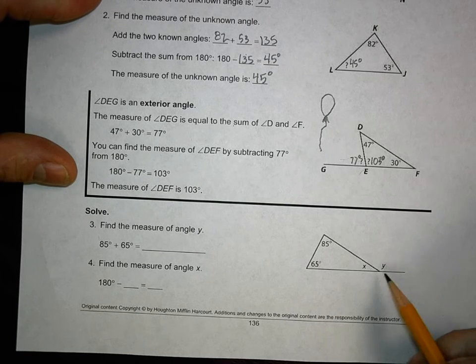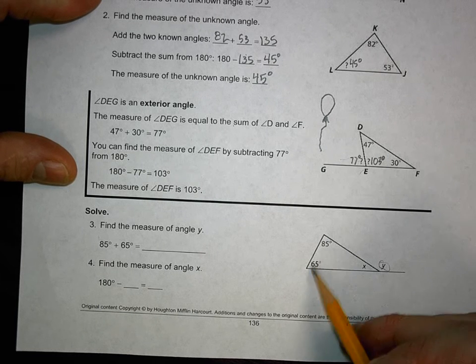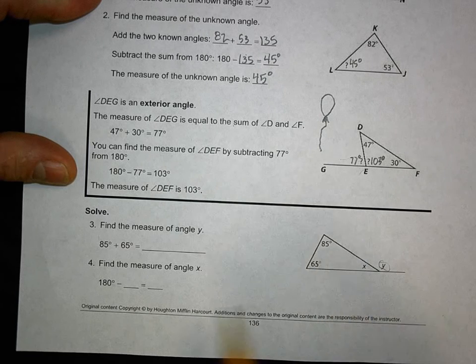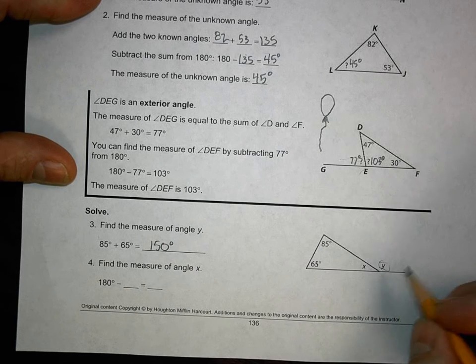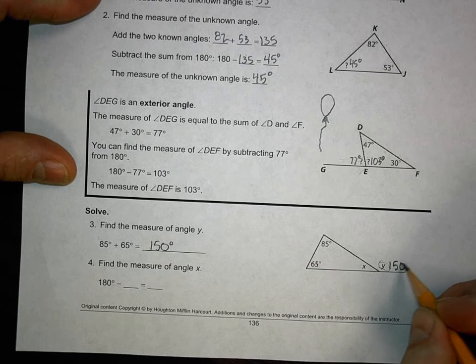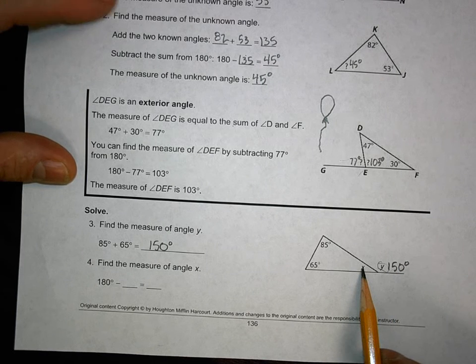So I want to find the angle of measure Y. I'm looking for measure Y, and I know that measure Y equals the sum of the two opposite angles from it. So 65 plus 85, that gets me 150 degrees. So I know this angle is 150 degrees.